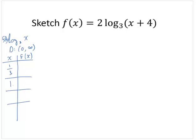1, 3, and 9. So then the log base 3 of 1 is 0. The log base 3 of 3 is 1. The log base 3 of 9 is 2. And the log base 3 of 1/3 is negative 1.